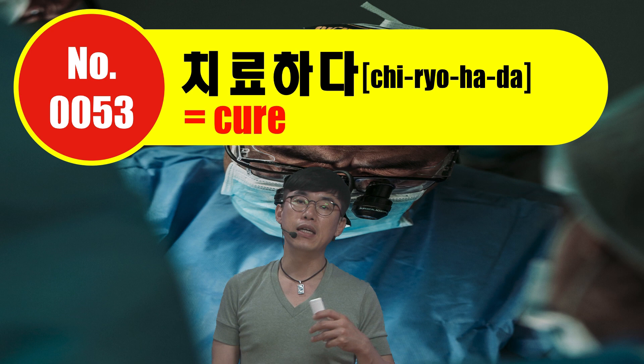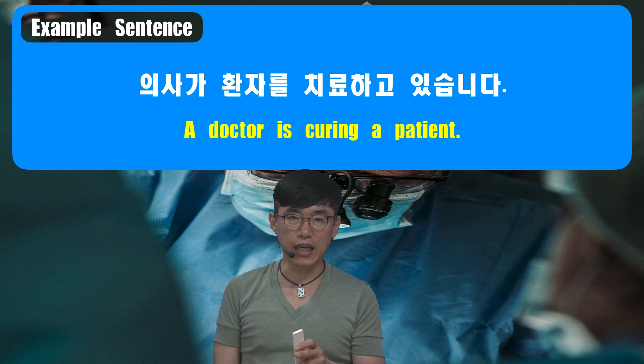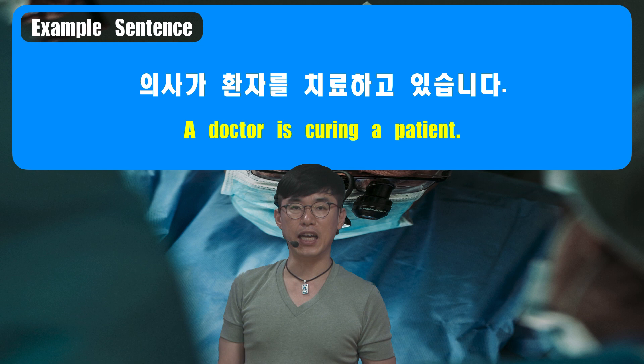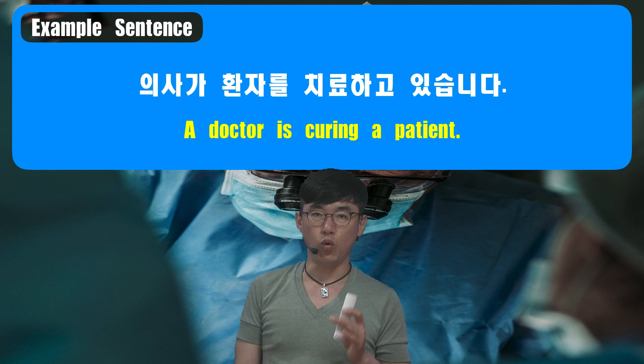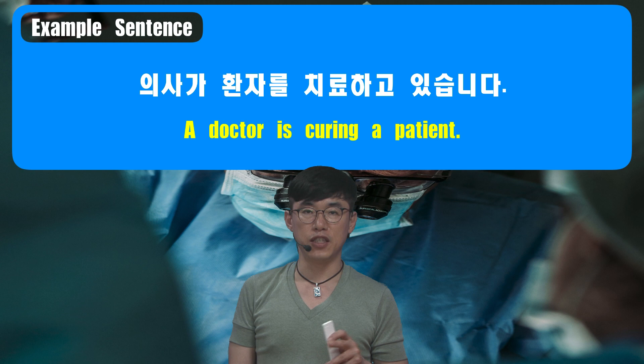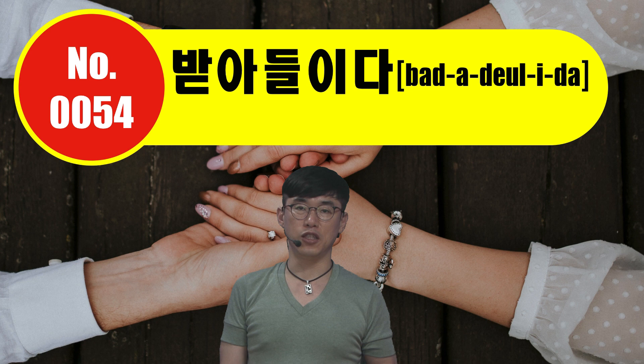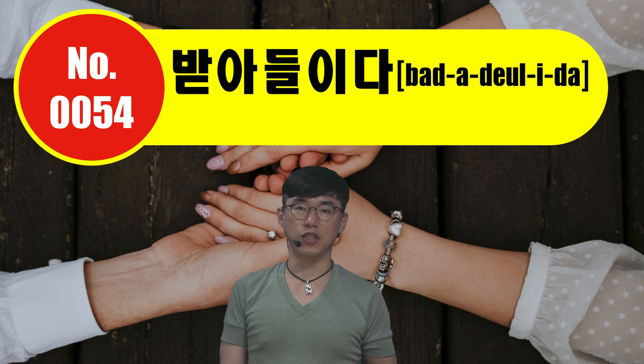Number 53 is 치료하다, which means 'to cure.' 의사가 환자를 치료하고 있습니다, meaning 'A doctor is curing a patient.' 의사 is 'doctor,' 가 is the subjective case, 환자 is 'patient.' Replacing 다 with 고 있습니다 gives the present progressive form, the same as 고 있는 중입니다 learned in number 44.